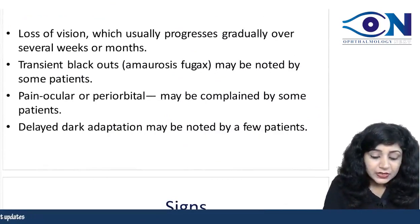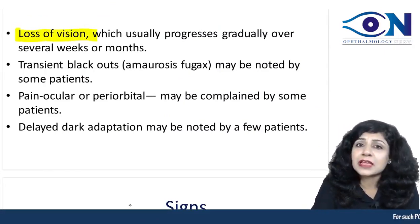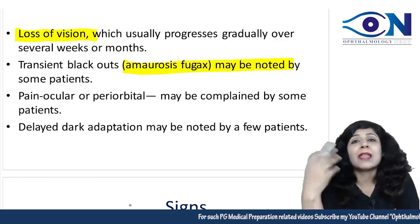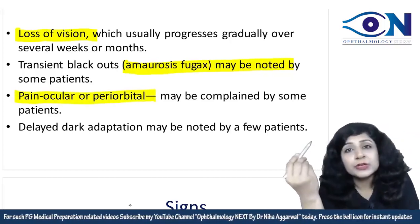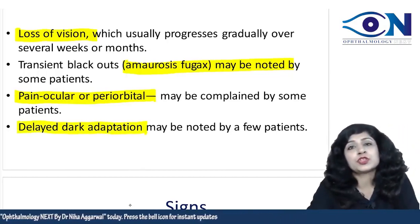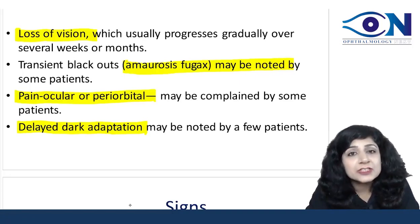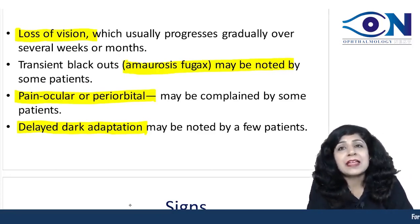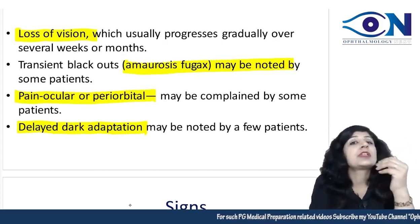Symptoms include loss of vision — obviously, since the main blood supply is affected — along with amaurosis fugax, blackouts, and syncopal attacks. There can also be periocular or periorbital pain, and some patients present with delayed dark adaptation. If a patient has the typical risk factors, evidence of hypoperfusion or carotid artery stenosis, along with these symptoms, keep ocular ischemic syndrome in mind.